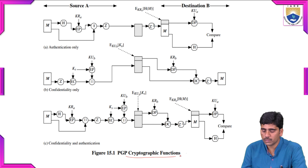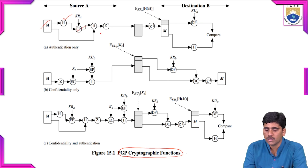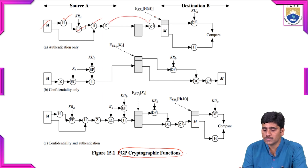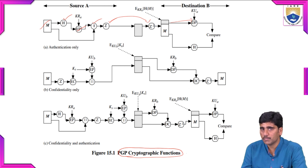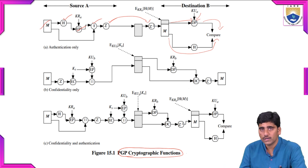Here the PGP cryptographic functions are shown. For authentication only, the message is generated, applying hash and encryption process, then applying compression using ZIP. For the receiver side, the ZIP file is decompressed, then the message goes through the decryption process using the public decryption key, and both messages are compared.